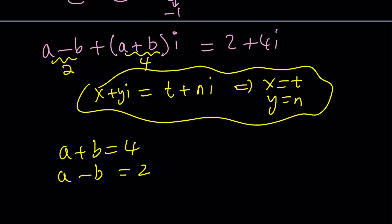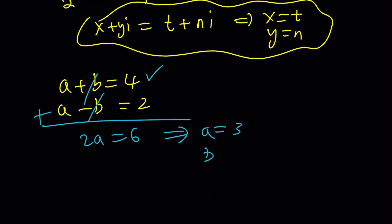If you solve this system, add the two equations, a cancels, I mean b cancels out, 2a equals 6, and that means a is equal to 3, since their sum is 4, from here we get b equals 1.